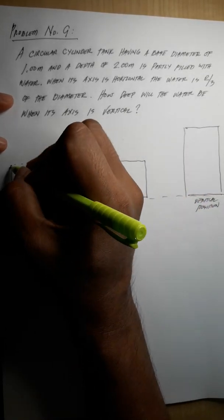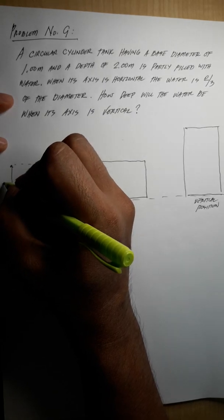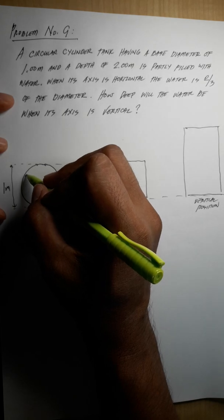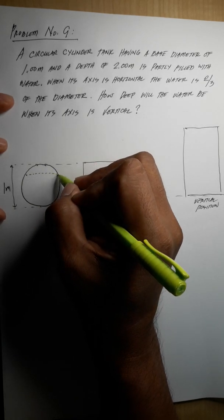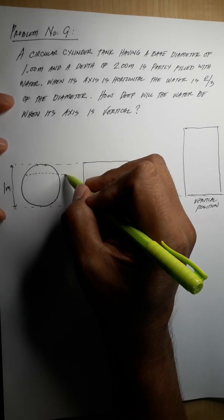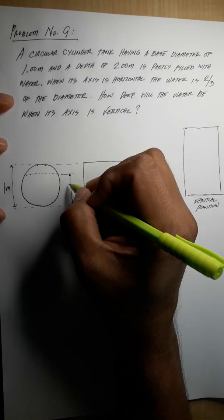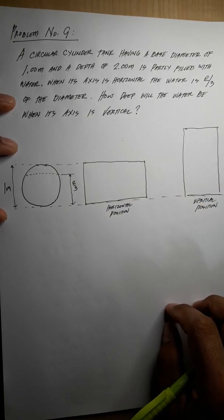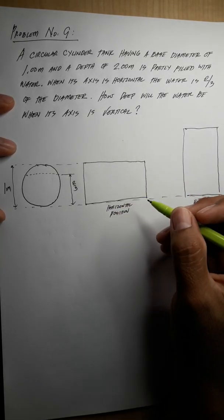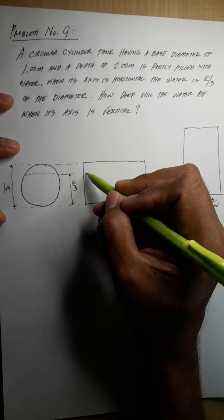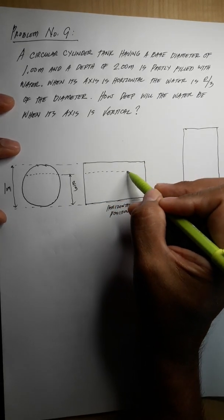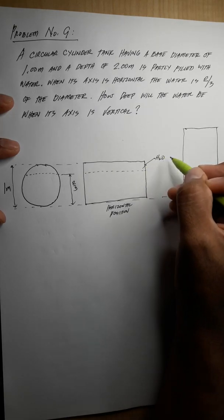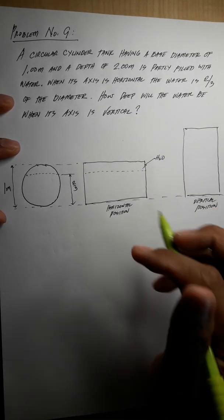We know that the diameter is one meter, so this is one meter. The level of the water here is two-thirds, so this is two-thirds — that is given. Here is the water level.